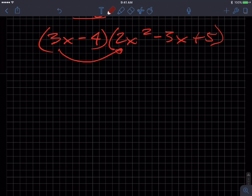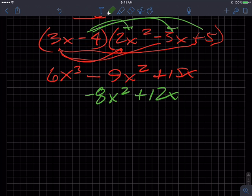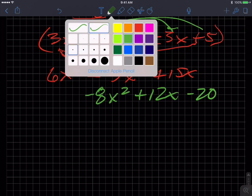Okay, 3x times 2x squared is 6x cubed, and I'm just drawing the arrowheads to keep track. That's going to be negative 9x squared, and then this guy times that guy, that's going to be plus 15x. Then I'm going to take the second term and multiply it times everything in the other polynomial.